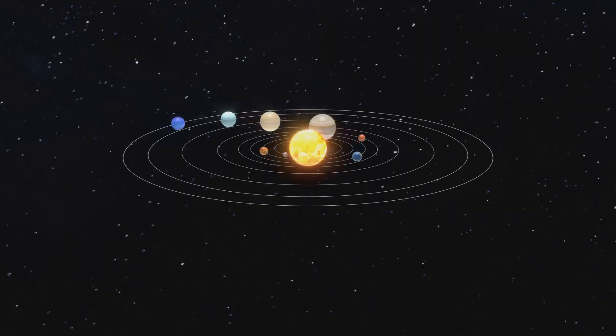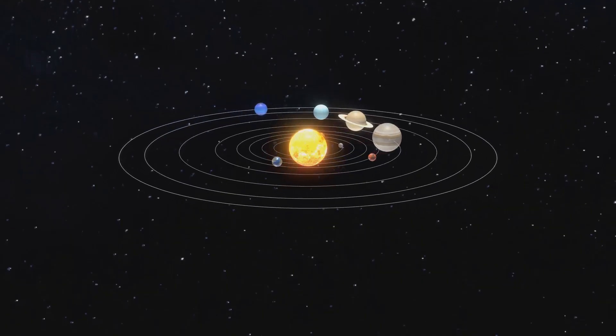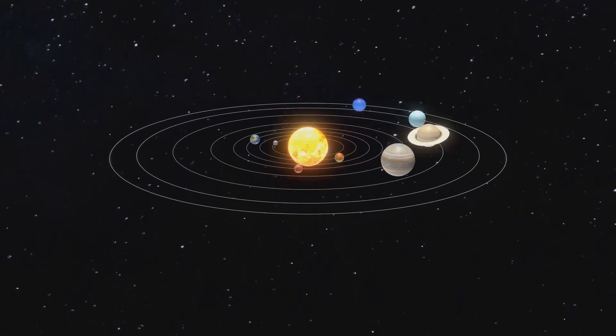Each planet follows its own path, like siblings circling a campfire, each with its own story and characteristics. But our solar system is more than just planets. It's a complex system filled with various celestial bodies.